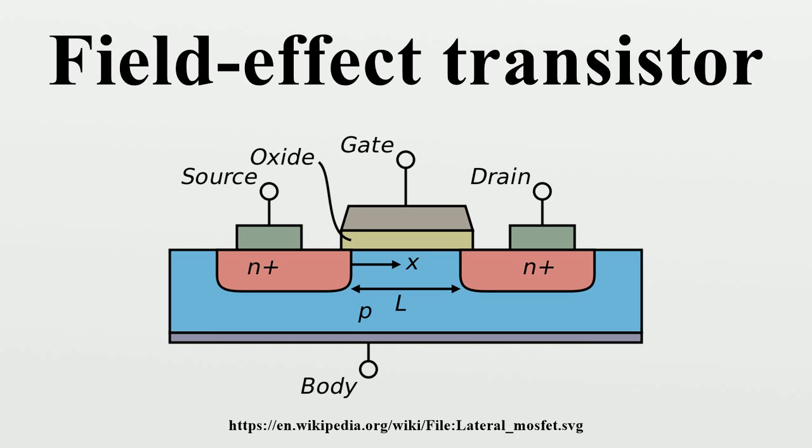For a better analogy with bipolar transistor operating regions, the saturation mode, or the region between ohmic and saturation, is used when amplification is needed. The in-between region is sometimes considered to be part of the ohmic or linear region, even where drain current is not approximately linear with drain voltage.